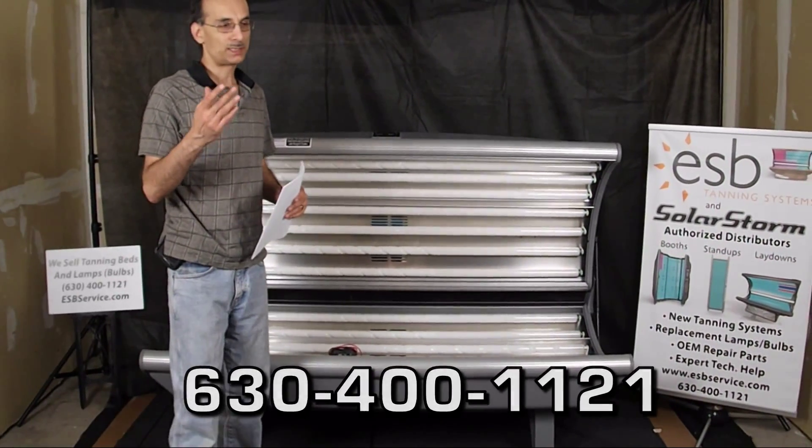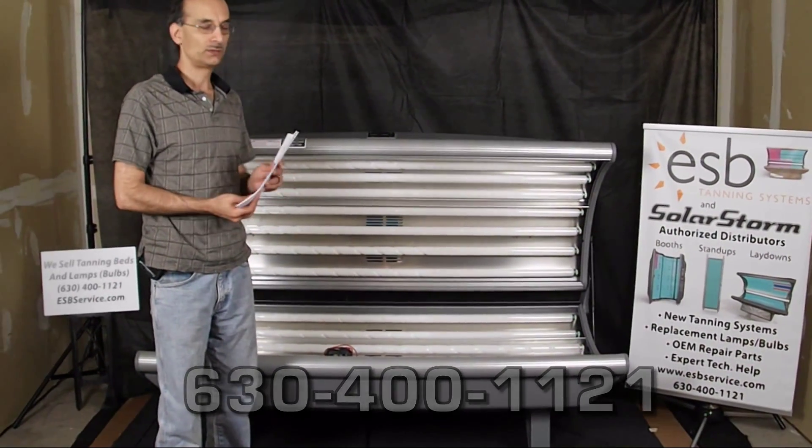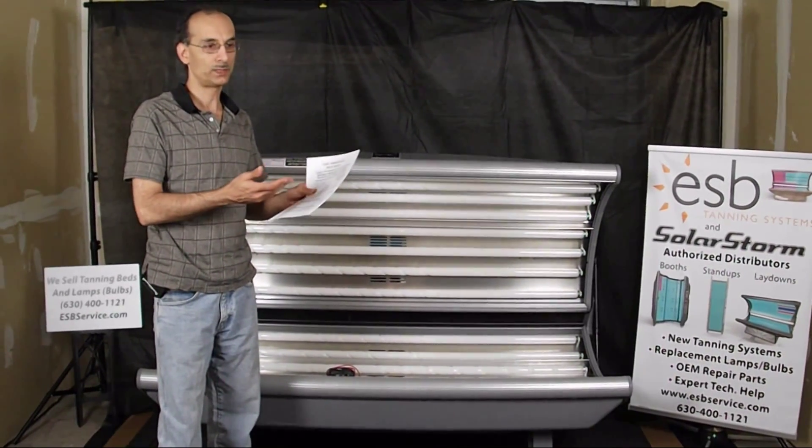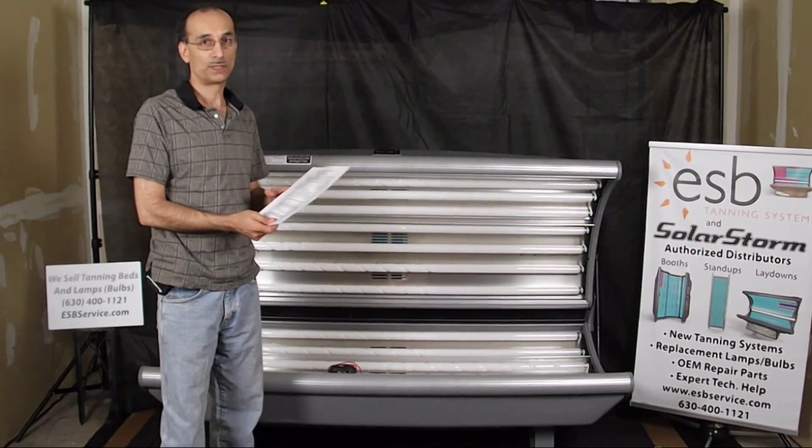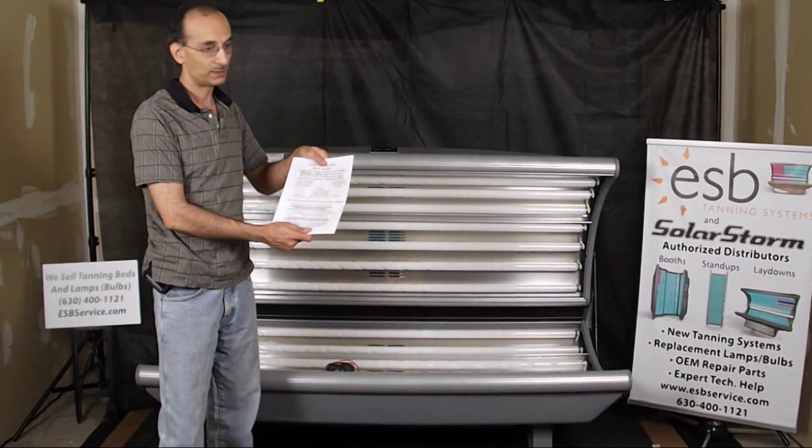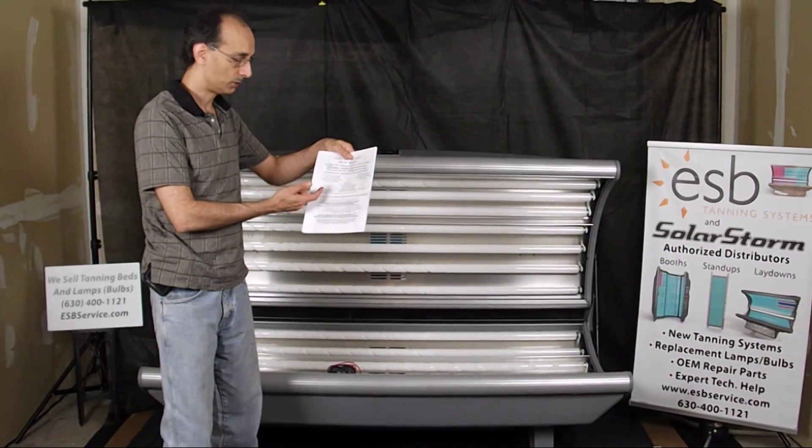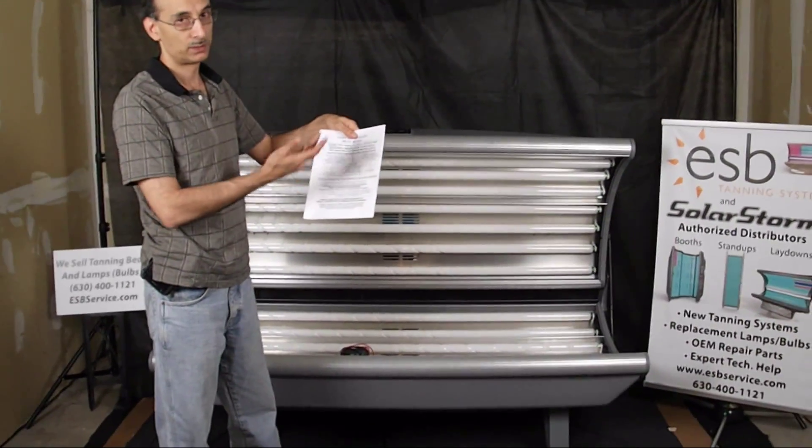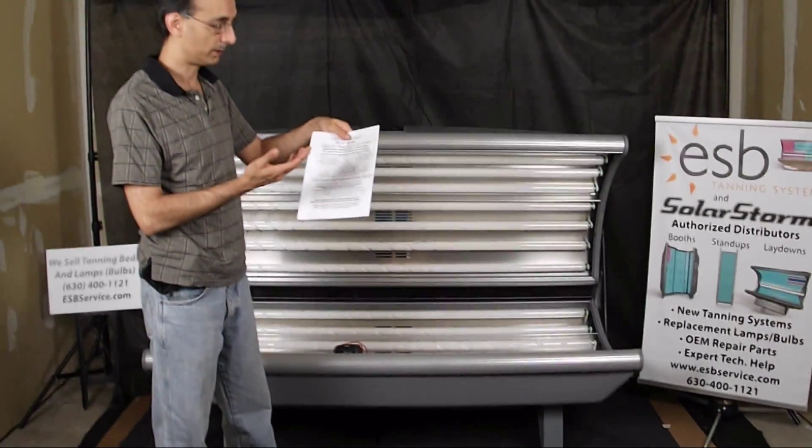Your ESB tanning bed should come with this information, but sometimes if you buy it used or maybe you haven't come across it for whatever reason, this is a sheet that comes in your owner's manual that tells you the basic configuration for the electrical that's required for your tanning bed.